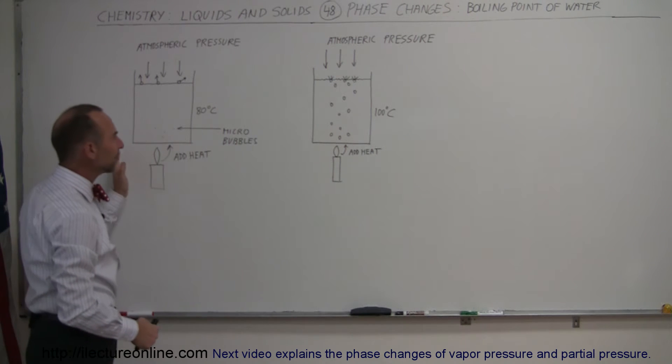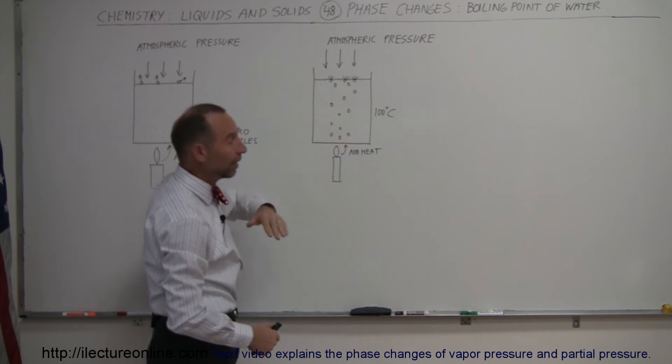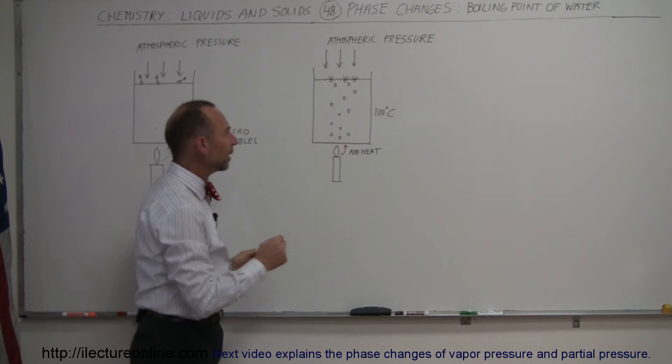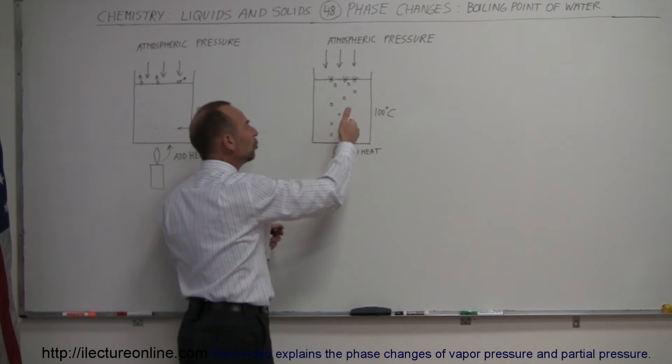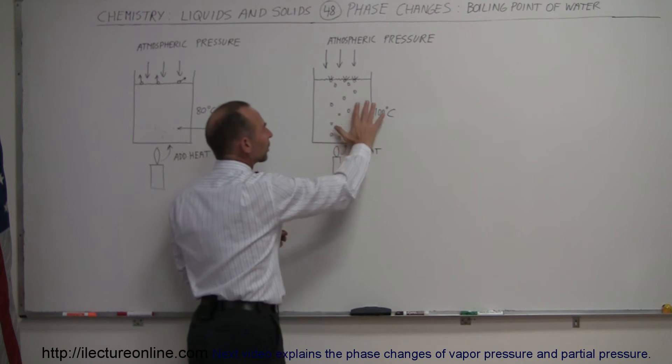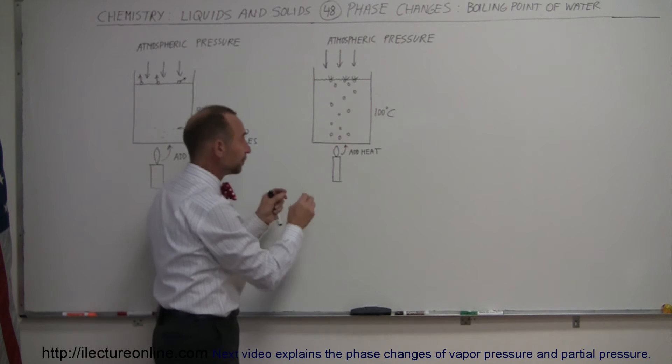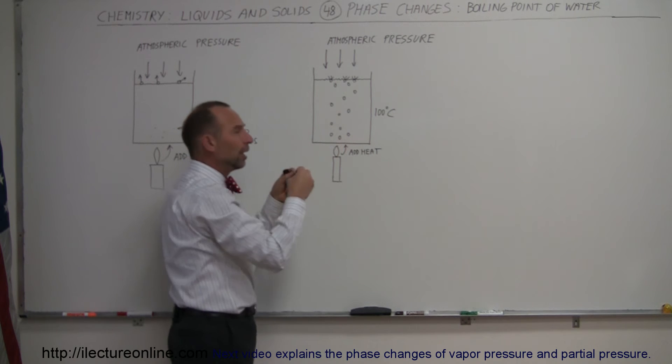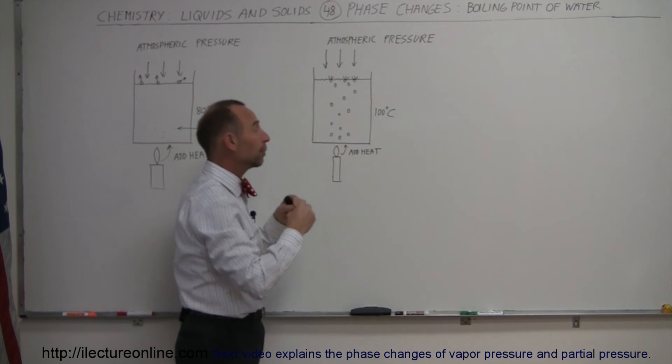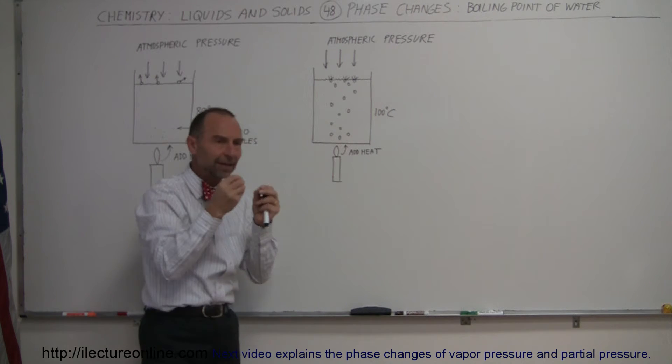What happens when the water finally reaches 100 degrees centigrade, assuming atmospheric pressure? Those little micro bubbles begin to grow. So much heat is being added that once all the water within the container reaches 100 degrees centigrade, any additional heat is not used to increase the temperature of the water but is now used to turn the water into vapor, because at that point